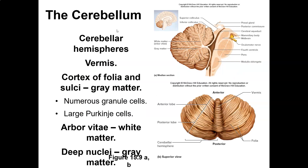The cerebellum has a walnut or cauliflower shape with cerebellar hemispheres and the vermis. It has a cortex of folia and sulci, numerous granule cells, and the white matter is called the arborvitae — tree of life. It also has deep nuclei.